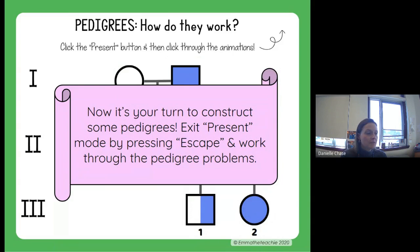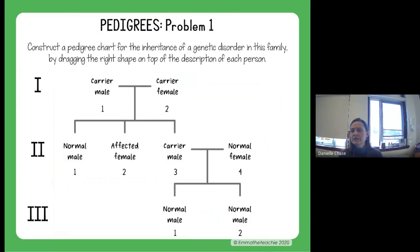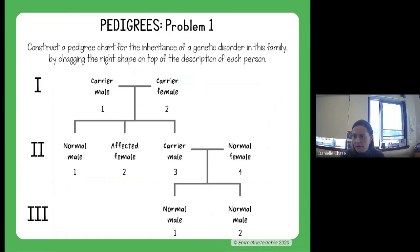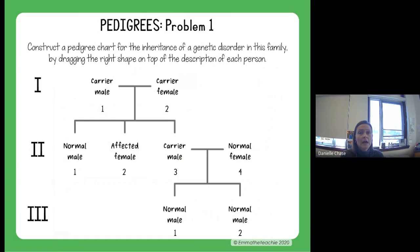Now we're going to practice with this information. For problem one, you're going to construct a pedigree chart for the inheritance of a genetic disorder in this family by dragging the correct shape onto the description for each person. Generation one, individual one is a carrier male — males are squares, and carriers are partially shaded. Females are circles. Normal shapes have no shading. Affected individuals are fully shaded because they likely have both recessive alleles.